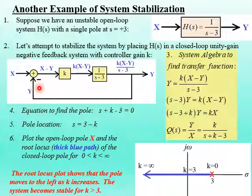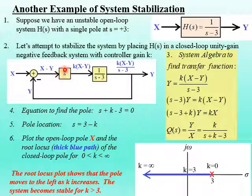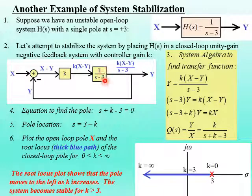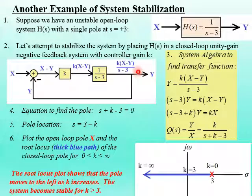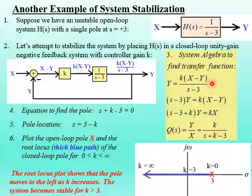Let's do our system algebra. We have Y coming back and being subtracted from X, so we get X minus Y going into the controller with gain K. What comes out is K times (X minus Y). That's the input to our original system with transfer function one over S minus three. So we have K times (X minus Y) multiplied by one over S minus three, and that output equals Y. We can multiply both sides by S minus three to get rid of the fraction.